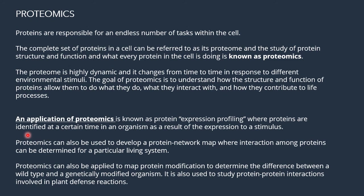We can now completely study a cell using all four omic sciences — starting from DNA to RNA, to proteins, to metabolites, and how they interact with each other and help in the functioning of a cell. Proteomics can also be applied to map protein modifications, to determine the difference between a wild type and a genetically modified organism, and to study protein-protein interactions involved in plant defense reactions.